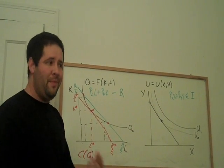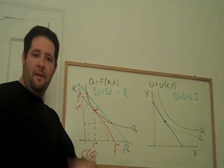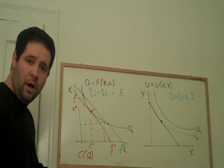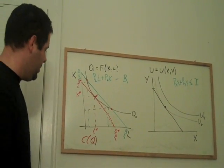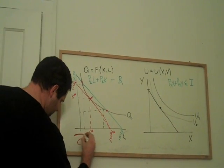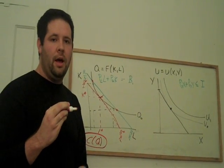We can do that for any given quantity. But when we do that, that gives us a function of quantity that tells us the minimum expenditure as a function of quantity. And it turns out that this cost function is going to be very important for supply.